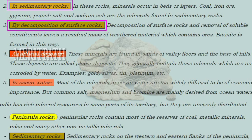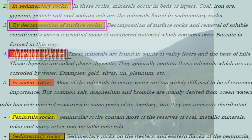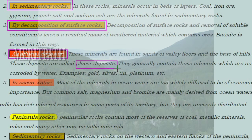Bauxite is formed by decomposition of surface rocks. As alluvial deposits, minerals are found in the sands of valley floors and the base of hills. These deposits are called placer deposits. They generally contain minerals which are not corroded by water, such as gold, silver, tin, and platinum.